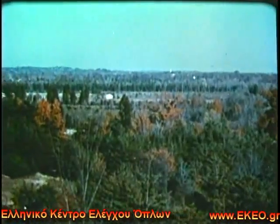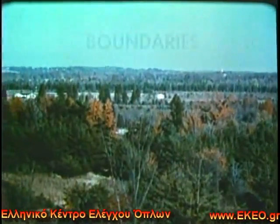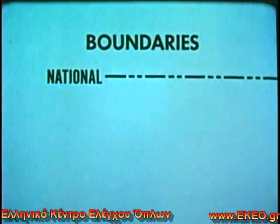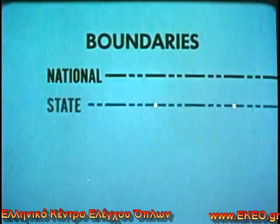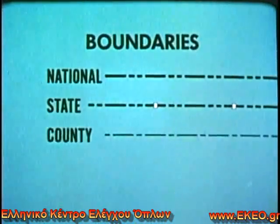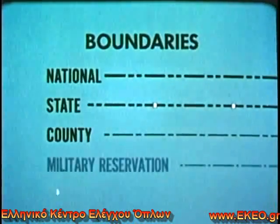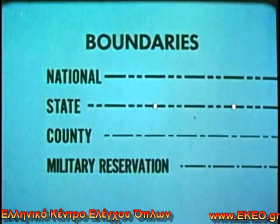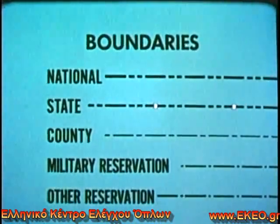But there is another man-made feature which normally is not physically apparent, yet must be depicted on the military map — this is the boundary line. The symbols representing boundary lines are varied to distinguish the areas which they enclose. A national boundary is depicted in one way; this is a state border, and this a county line. Military reservations are outlined by one symbol, and other reservations by another.